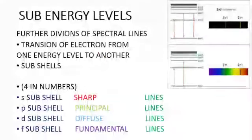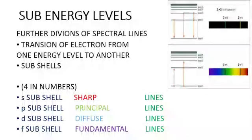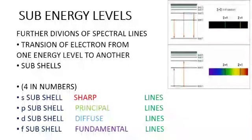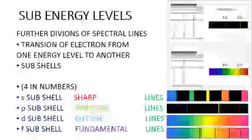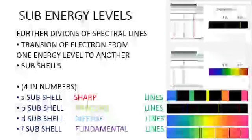Sub-energy levels, sub-levels, or sub-shells — these are the second addresses for the electrons. For the study of spectrum, scientists found that the main spectrum is subdivided into various other spectral lines. These lines are produced due to transition. Transition — when an electron absorbs energy, it moves or jumps from a lower energy level to a higher energy level. And when an electron emits energy, it jumps from a higher energy level to a lower energy level. This is called the transition of an electron from one energy level to another energy level. Due to this transition, the spectrum gave the concept of sub-energy levels, sub-shells, or sub-levels.